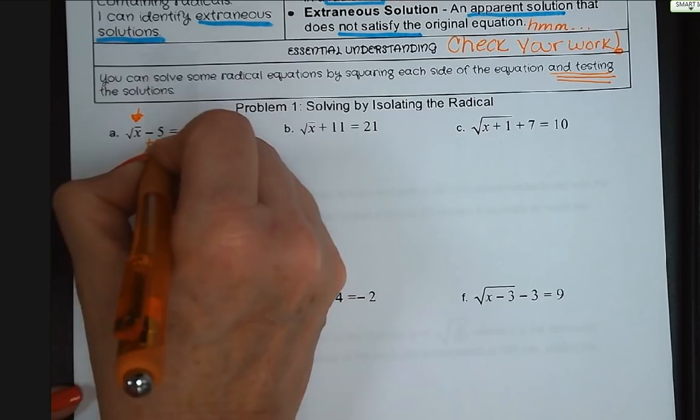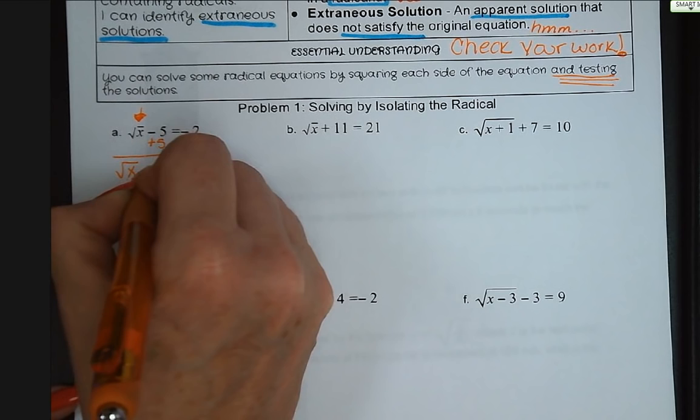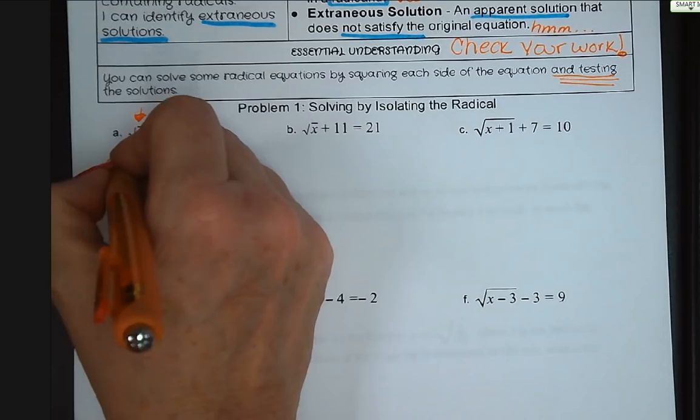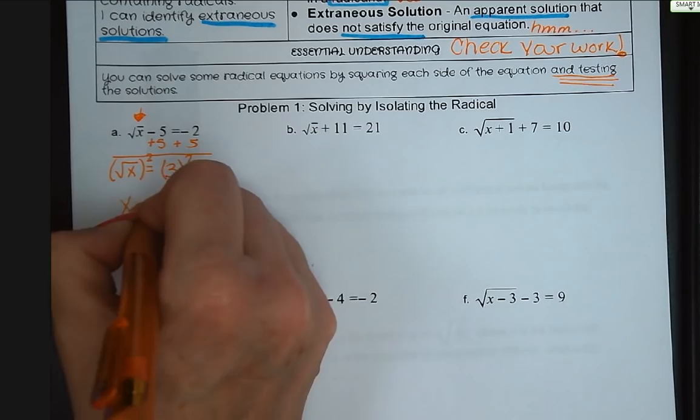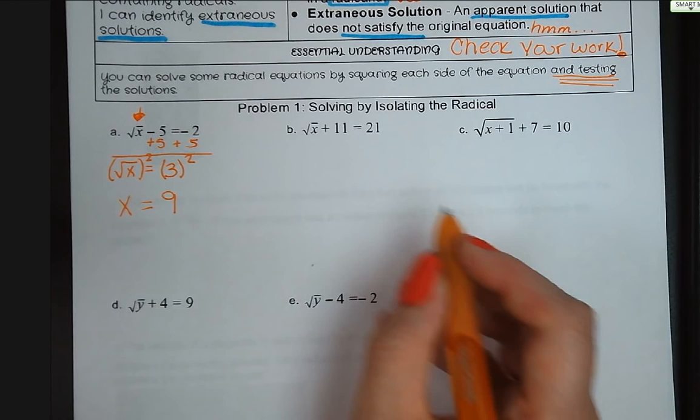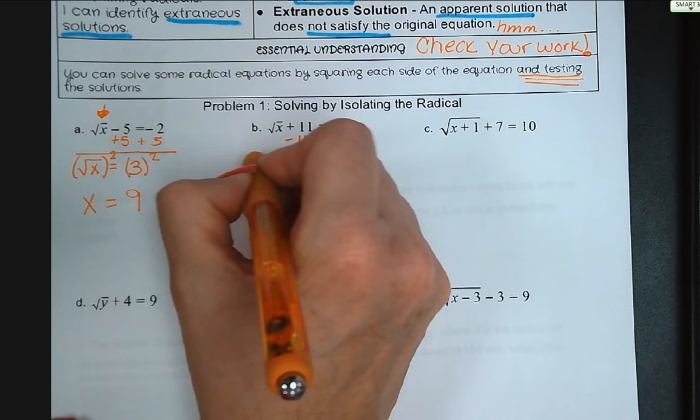To isolate the radical, we use opposite operations. For letter a, we add 5 to both sides, giving us the square root of x is equal to 3. Then we square both sides and get x equals 9. For letter b, we subtract 11 from both sides, so the square root of x equals 10.